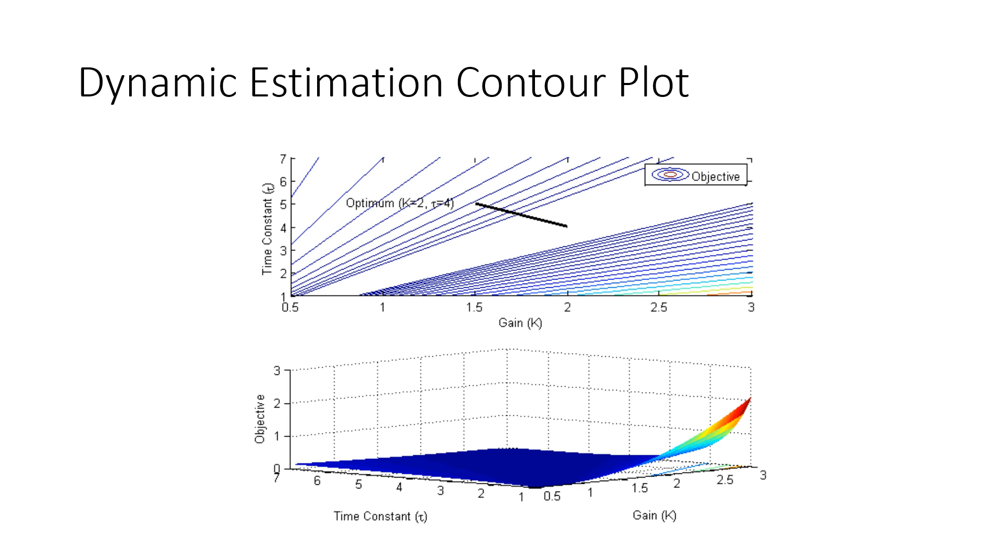One thing to note, just for this simple linear system, sometimes we can also generate a contour plot to be able to show how, as we change our time constant and gain, time constant and gain, this is just a 3D version, and this is just a 2D version of the same information, that this might be our optimal value. But as we move away from that, we're going to have a worse objective function.